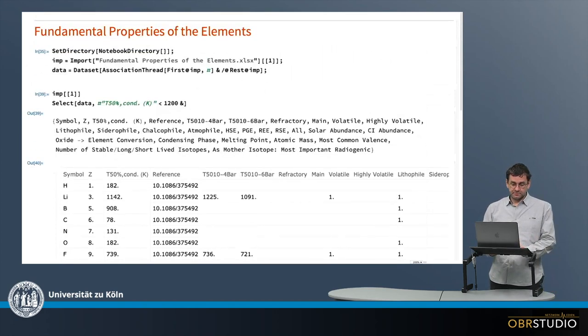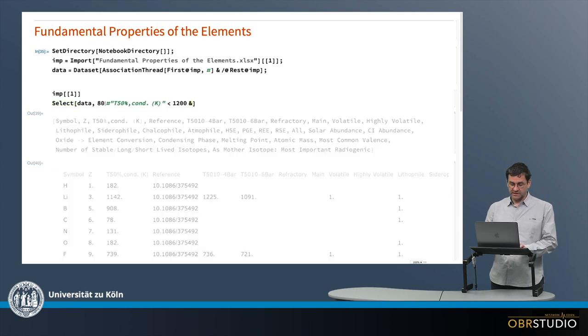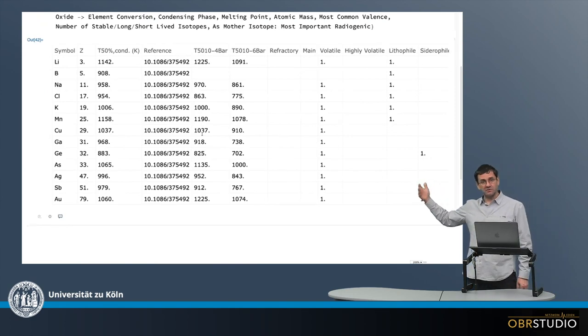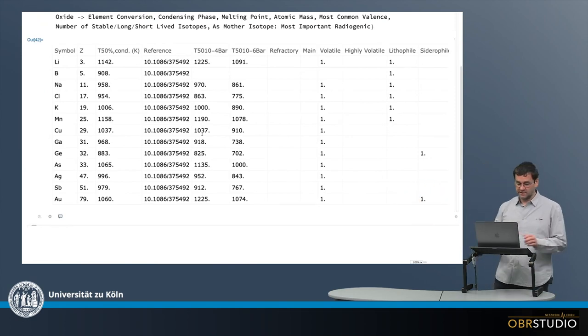And then maybe I just want to get the elements in a certain interval, only between say 800 and 1200 Kelvin. So this is the category name and this is the lower and the higher temperature. Then I execute again and these are now all the elements condensing in this interval.